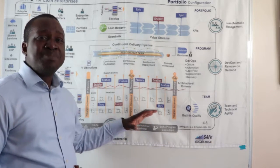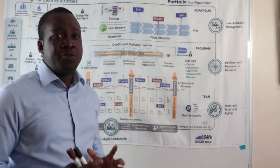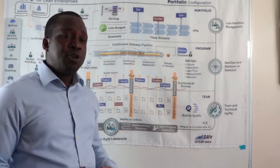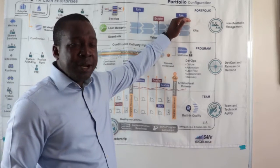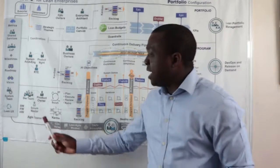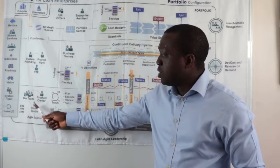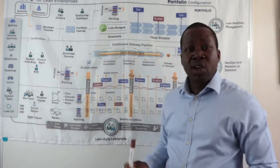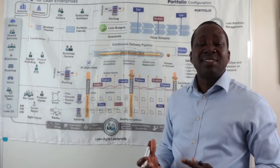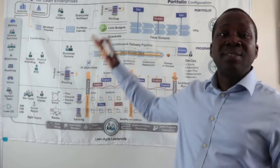The portfolio configuration is made up of three layers and they all form part of the full configuration. In the portfolio configuration, we have the team layer, the program layer and the portfolio layer. In the team area, we've got the Agile teams, the DevOps team, the Dev team, the Product Owner and the Scrum Master, who will be working as a team to deliver business stories and to deliver business goals.